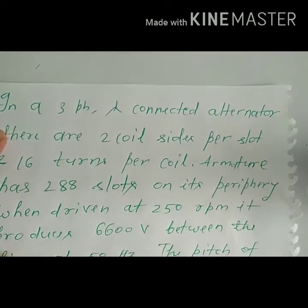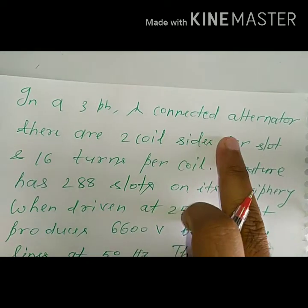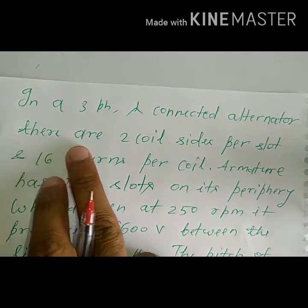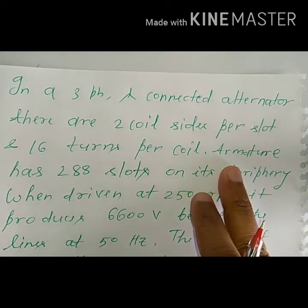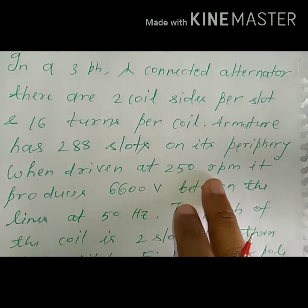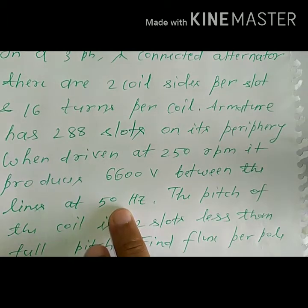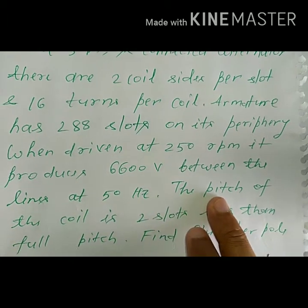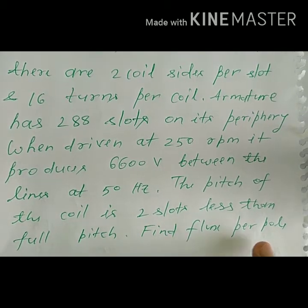A three-phase star-connected alternator has two coil sides per slot and 16 turns per coil. The armature has 288 slots on its periphery. When driven at 250 rpm, it produces 6600 volts between the lines at 50 Hz. The pitch of the coil is two slots less than full pitch. Find flux per pole.